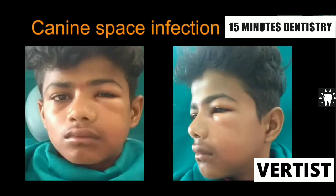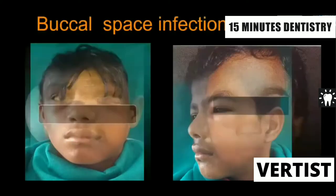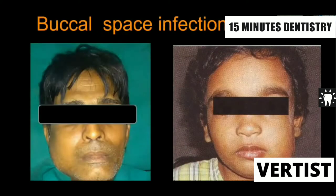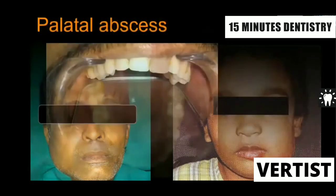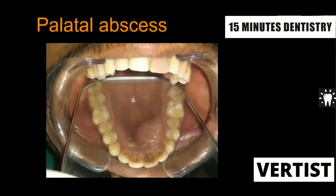Canine space infections occur with the lateral incisor, canine, or even the central incisor. The buccal space depends on the lower molar or posterior teeth. You can also identify buccal space involvement by site. This is palatal space involvement — palatal or buccal space involvement will be the main finding, and this will also be asked in your viva questions.